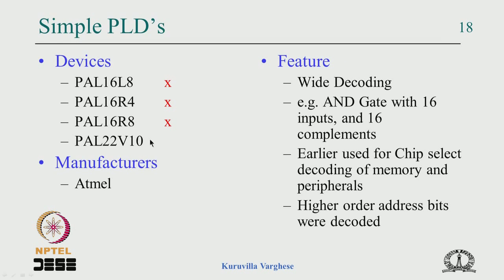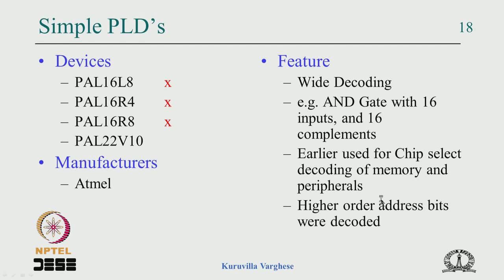We also looked at simple PLDs like the 16L8, 16R4, 16R8 — all with registers — and the 22V10, which Atmel manufactures today. The key feature is very wide decoding: a product term AND gate can have 16 inputs and their complements. This was used in chip-select decoding where you have a microprocessor, memory, or peripheral with maybe 20 address lines — 12 for addressing and 8 for decoding — and PLDs were used to decode those higher address lines along with control and data.